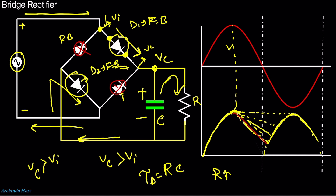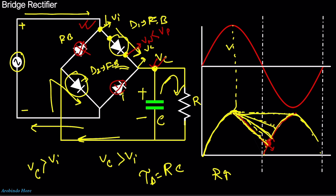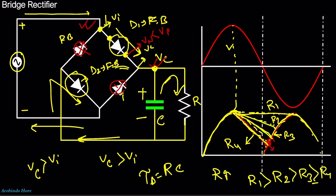When the capacitor voltage falls below the rising input voltage, the diodes become forward biased again and the capacitor recharges. For different resistance values R1 > R2 > R3 > R4, the ripple in the output voltage decreases as resistance increases. The amount of ripple in the output completely depends on the discharging time constant, which is R times C.